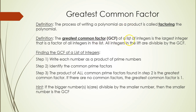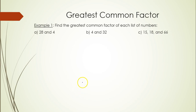The greatest common factor of a list of integers is the largest integer that is a factor of all integers in the list, meaning everything in the list must be divisible by the GCF. To find the GCF, write each number as a product of primes, identify the common prime factors, and multiply them together. As a hint, if the bigger number is divisible by the smaller number, the smaller number is the GCF.